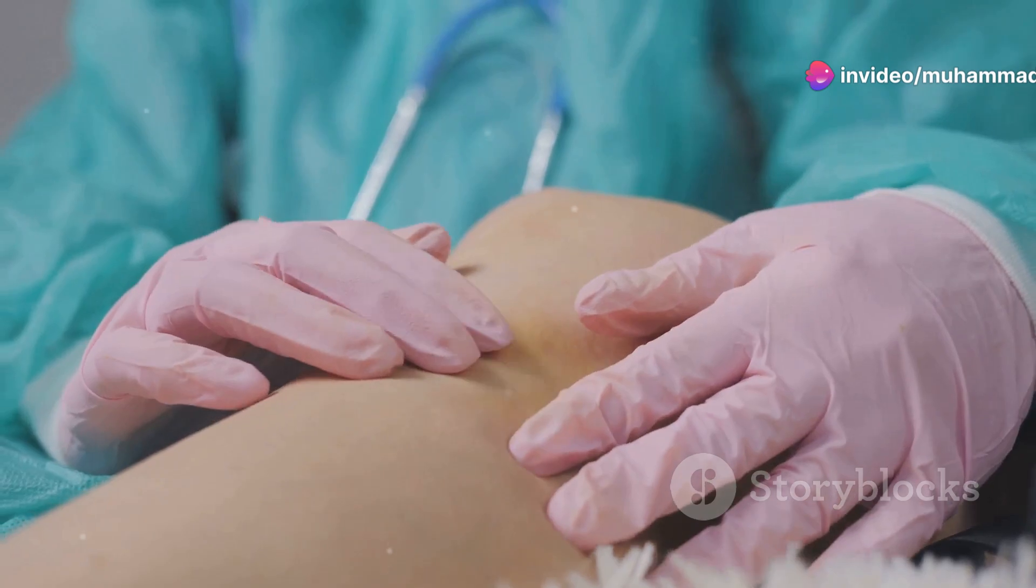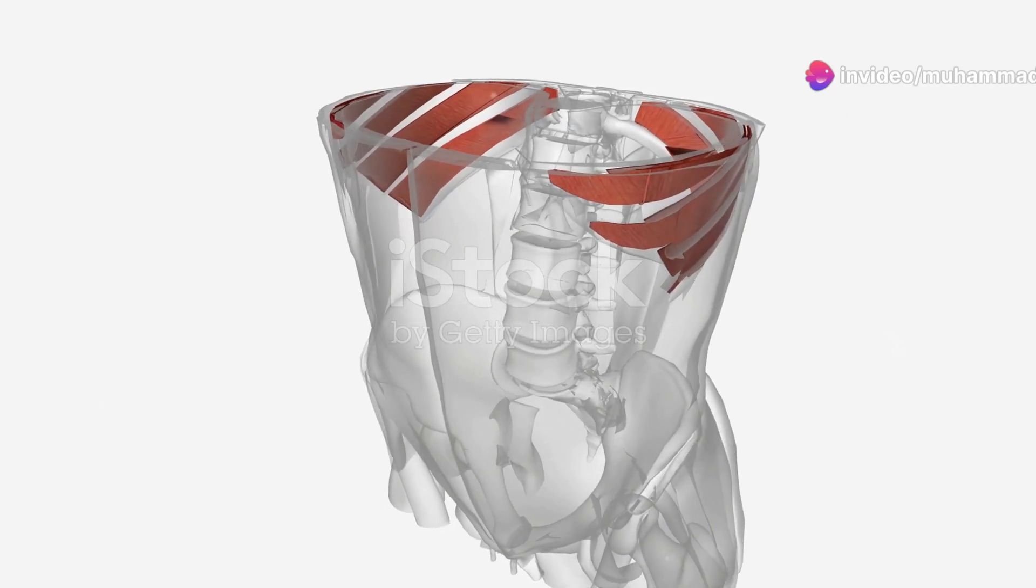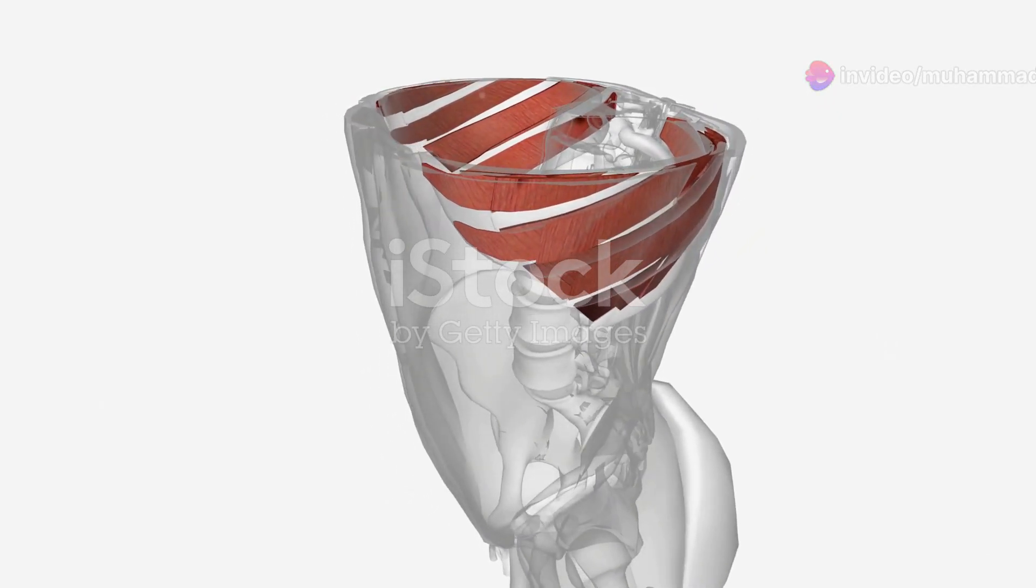Yes, that's the funny bone spot. The ulnar nerve then continues down to supply the muscles in your forearm and hand.